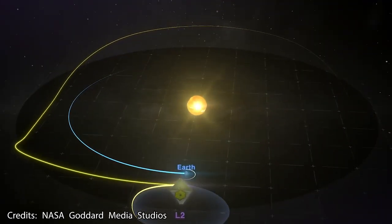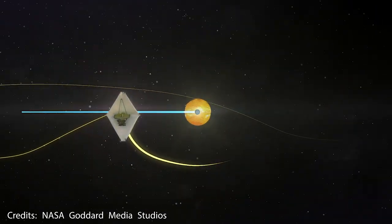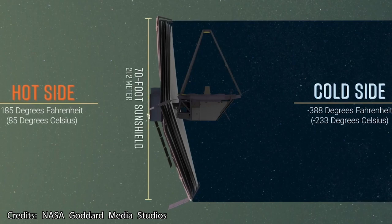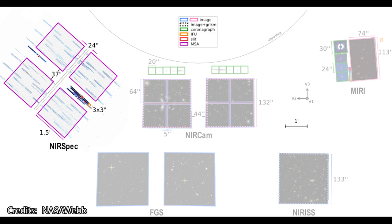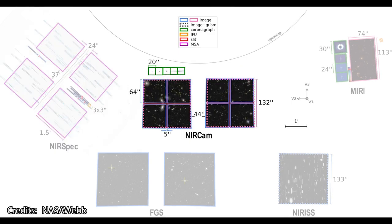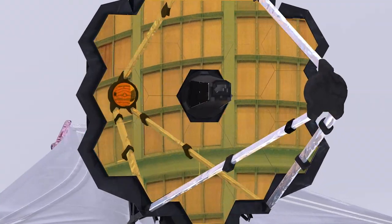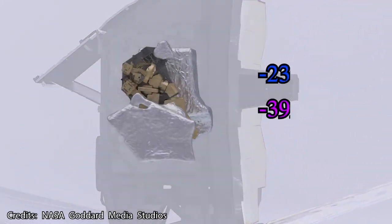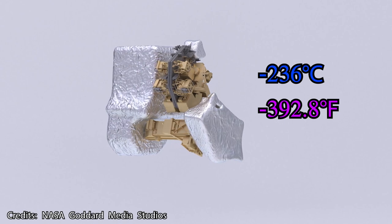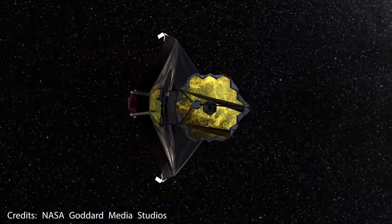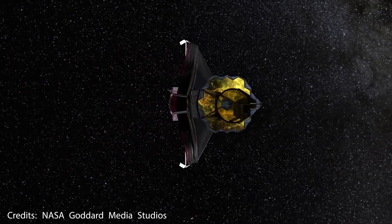The James Webb Space Telescope uses two different types of cooling methods. The first one is passive cooling, and this one is effective enough to cool down three out of four scientific instruments, namely the near-infrared spectrograph, the near-infrared camera, and the near-infrared imager and slitless spectrograph. These three instruments need to be at around minus 236 degrees Celsius to work properly, a temperature that is achievable passively thanks to the extreme cold that deep space offers.